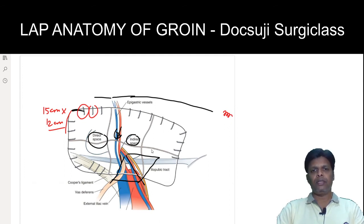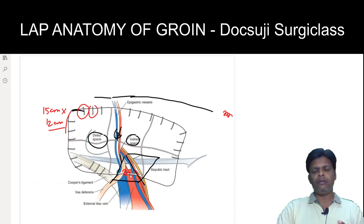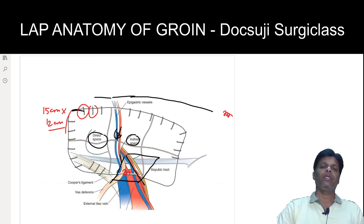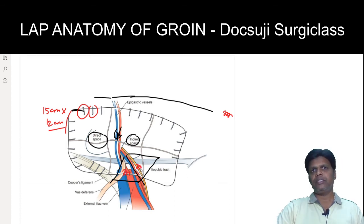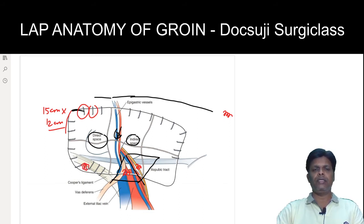You should not fire any tacker inside the triangle of doom. If you do, injury to the external iliac vessels will cause torrential bleeding that is very difficult to control — that is why it is called the triangle of doom. Similarly, in the triangle of pain, firing a tacker risks injuring one of the four nerves, causing postoperative neurological pain — that is why it is called the triangle of pain. Ideally, tackers should be fired over Cooper's ligament or the upper medial or lateral aspects, and never in these two triangles.